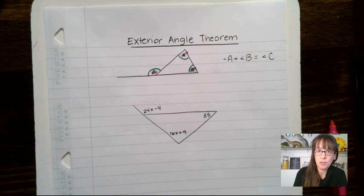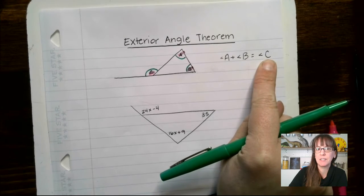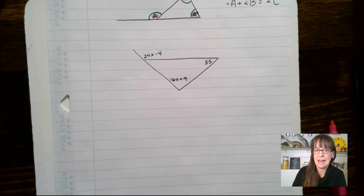Go ahead and get your notes out and make sure that you're writing this down. So here's our theorem. A plus B is going to give us angle C. So let's talk about that guy in action.